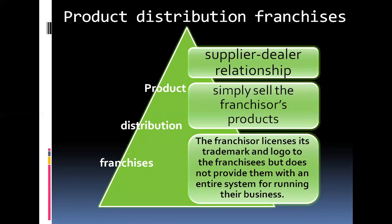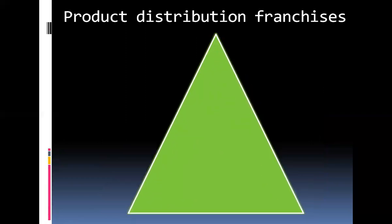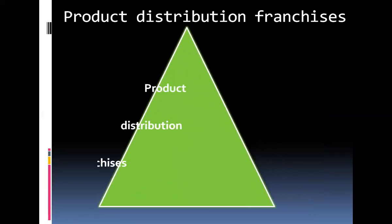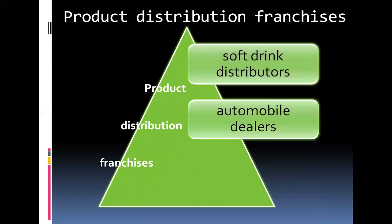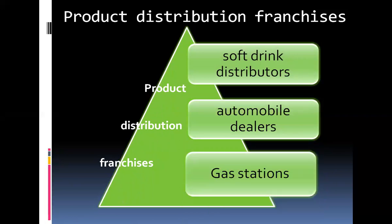The industries where you most often find this type of franchising are soft drink distributors, automobile dealers, and gas stations. Although product distribution franchising represents the largest percentage of total retail sales, most franchises available today are business format opportunities.